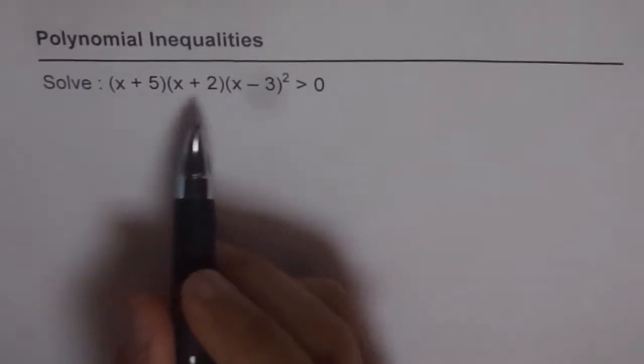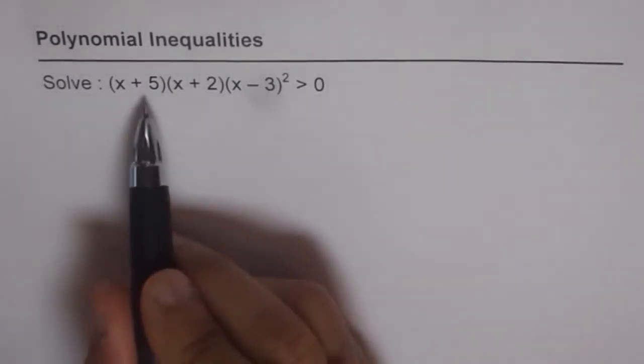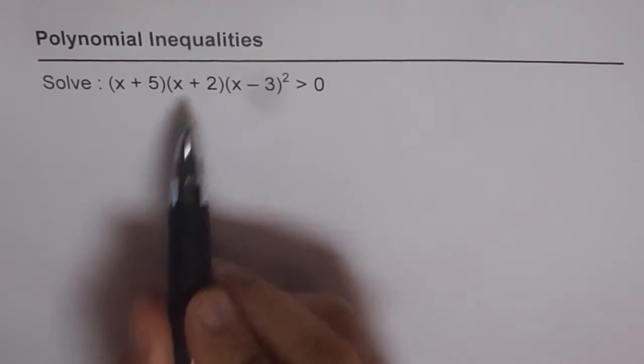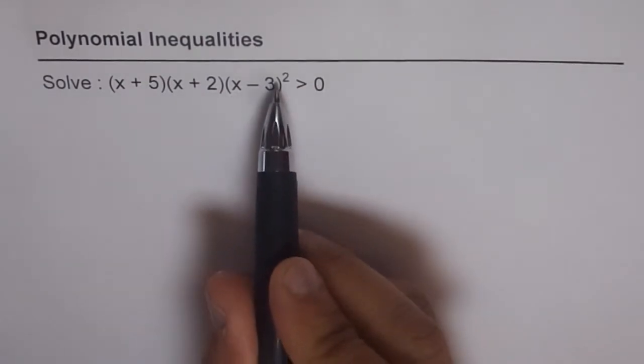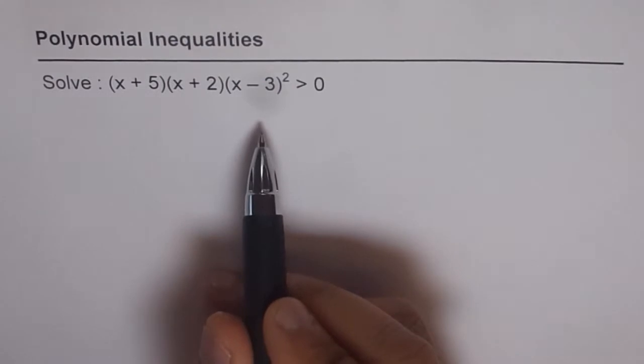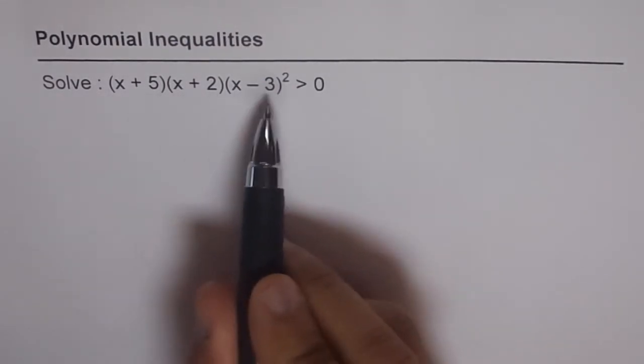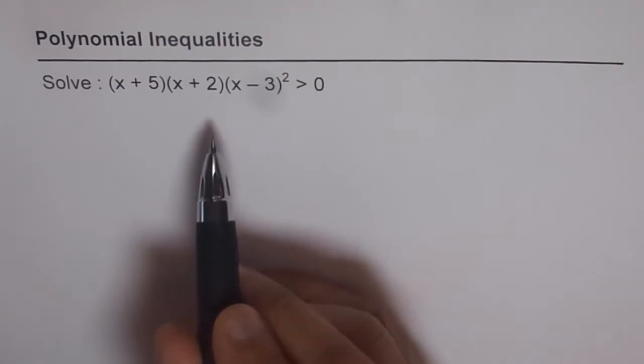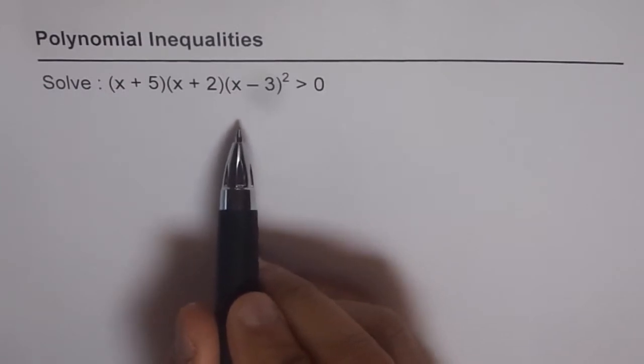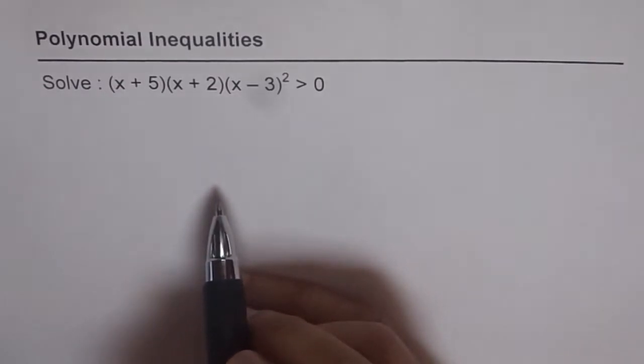So here we have a polynomial equation which is x plus 5 times x plus 2 times x minus 3 whole square greater than 0. Now, if you note, you can find the zeros of this. It is already given to you in factored form. If a polynomial is not given to you in factored form, you need to factorize first and then follow the steps which I will discuss with you now.